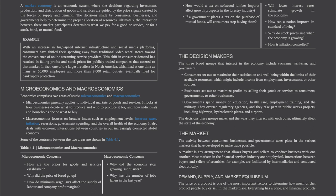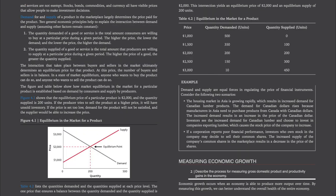Demand, supply, and market equilibrium. The price of a product is one of the most important factors to determine how much of that product people buy or sell in the marketplace. Everything has a price, and financial products and services are not exempt. Stocks, bonds, commodities, and currency all have visible prices that allow people to make investment decisions. Demand for and supply of a product in the marketplace largely determines the price paid for the product.